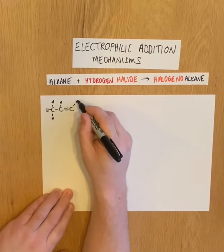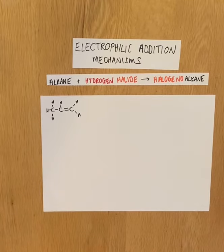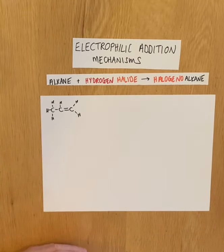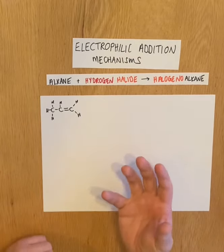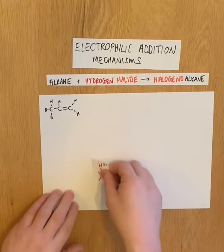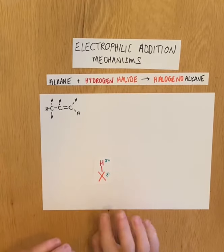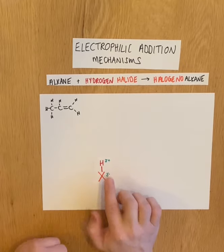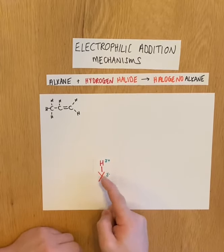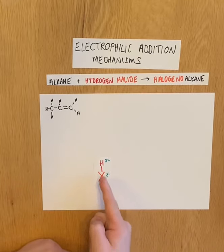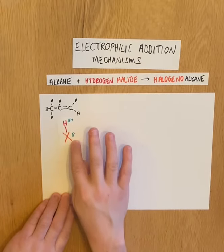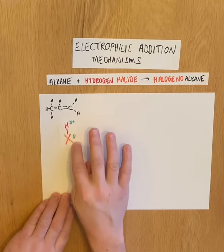There are many ways in which we can draw a mechanism. We have our propene molecule with a region of electron density that's going to attract any delta-positive or positive species — these are electrophiles. Hydrogen halides are already polar molecules because the halogen is more electronegative than hydrogen, so the electron cloud is pulled towards the halogen, making it delta-negative and the hydrogen delta-positive.